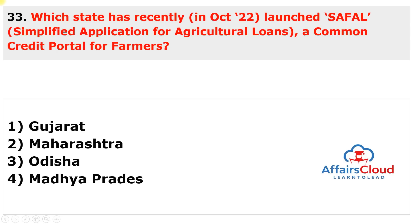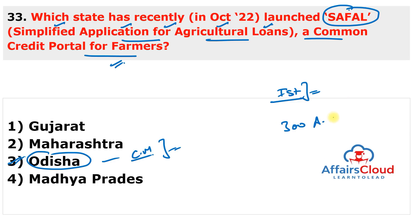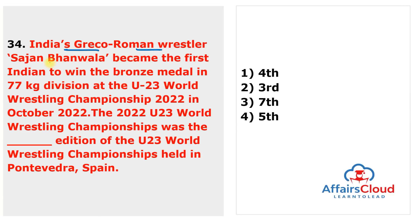Next question: which state recently launched SAFAL — Simplified Application for Agriculture Loans — a common credit portal for farmers? The answer is Odisha. Chief Minister Naveen Patnaik of Odisha launched SAFAL, a common credit portal for the welfare of farmers. SAFAL stands for Simplified Application for Agricultural Loans. It is India's first online agricultural credit facilitation portal, providing access to more than 300 agricultural and allied sector loans from more than 40 banks for farmers and agricultural owners.